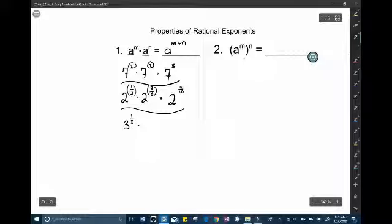So something like 3 to the 1 third times 5 to the 2 fifths. You cannot use that property because the bases are different. Okay so it does not apply.